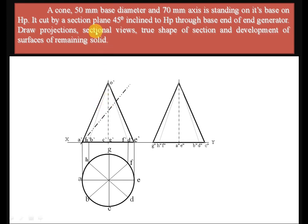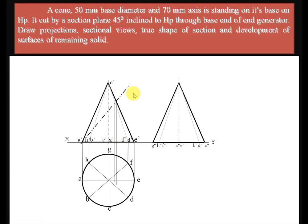The section plane is drawn inclined at 45 degrees, passing through point A' (end of the end generator) in the front view. The section plane cuts the generators: O'E', O'D', O'C' and O'G', O'B' and O'H', and O'A' at the bottom. From all these intersecting points on the generators, draw projection lines straight down to the top view until they intersect each respective generator.